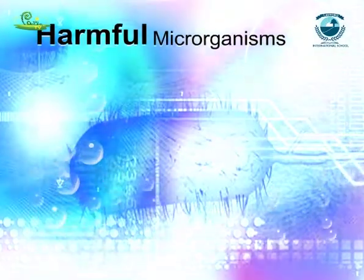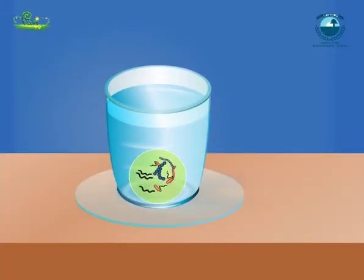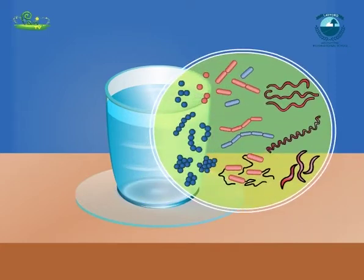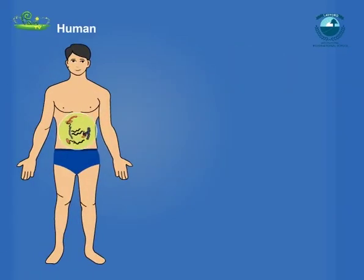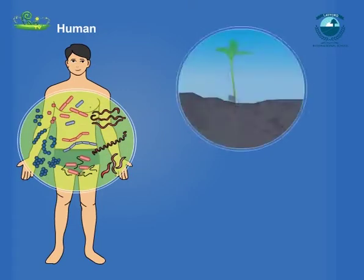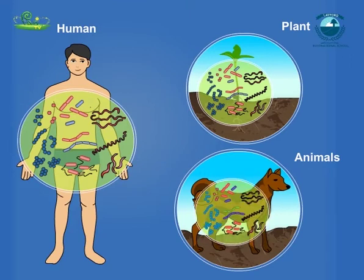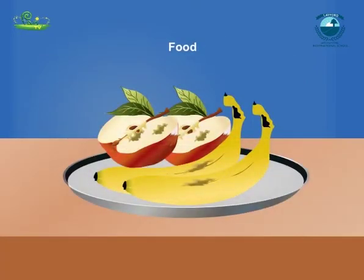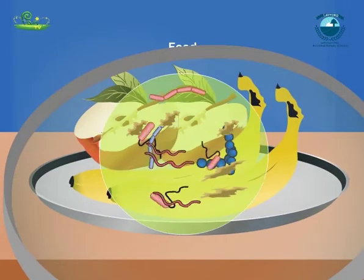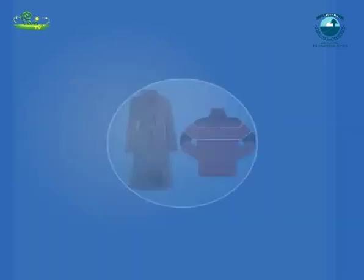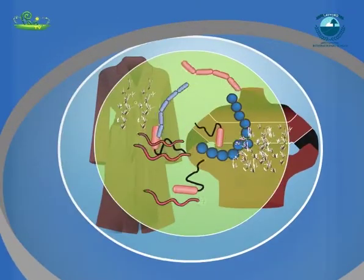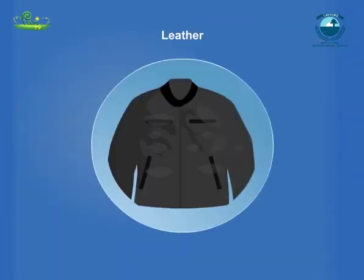Microorganisms are harmful in many ways. Some of the microorganisms cause diseases in human beings, plants and animals. Such disease-causing microorganisms are called pathogens. Some microorganisms spoil food, clothing and leather.